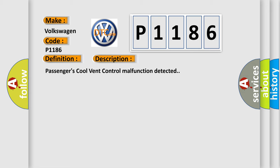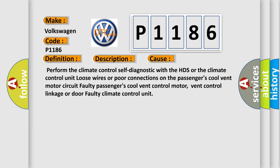This diagnostic error occurs most often in these cases: Perform the climate control self-diagnostic with the HDS or the climate control unit. Loose wires or poor connections on the passenger's cool vent motor circuit. Faulty passengers' cool vent control motor, vent control linkage, or door. Faulty climate control unit.